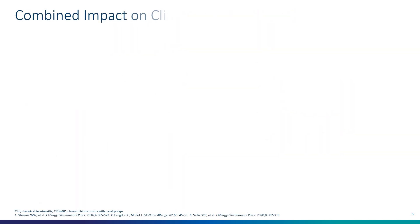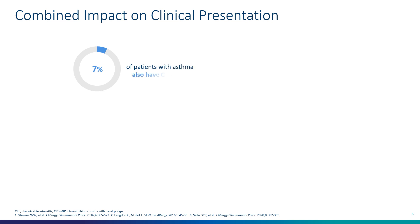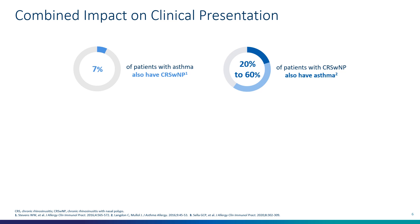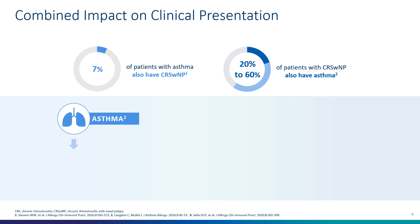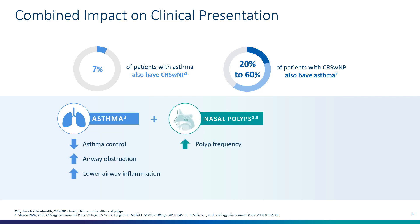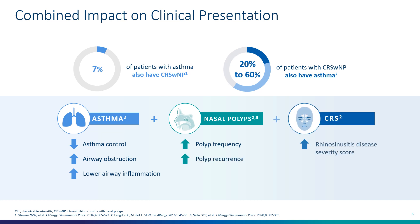The combined impact on clinical presentation is demonstrated here. With patients with asthma, about 7% also have chronic rhinosinusitis with nasal polyps. About 20% to 60% with chronic rhinosinusitis with nasal polyps also have asthma — you can see how these walk hand in hand. When nasal polyps is associated with asthma, there's typically poor asthma control, greater airway obstruction, and greater airway inflammation.